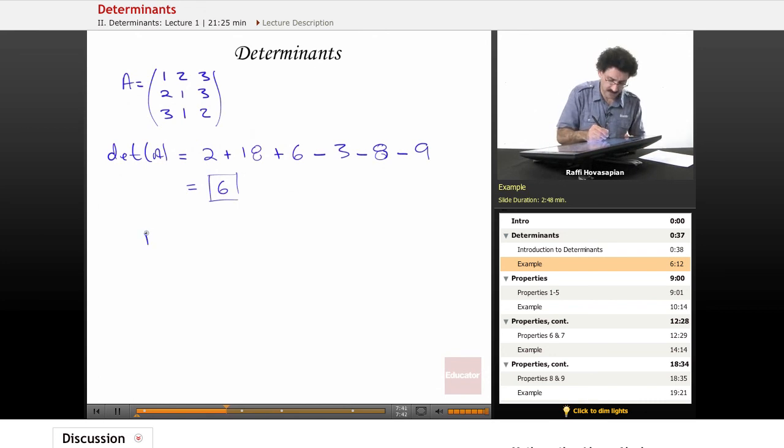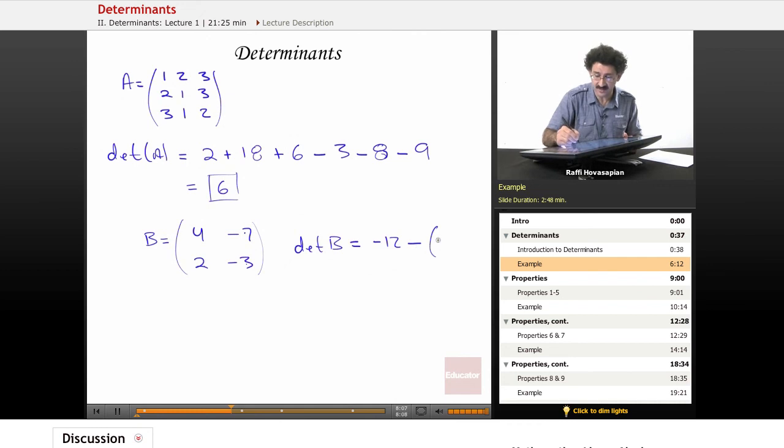Let's do a 2 by 2. Let's say B is equal to 4, negative 7, 2, negative 3. So now we have some negative entries. Okay, the determinant of B is equal to this times this. 4 times negative 3 is negative 12. Minus this times this. This times this is negative 14. The minus sign has to stay. Okay, so it's negative 12 minus a negative 14. Minus 12 plus 14. It is equal to 2.